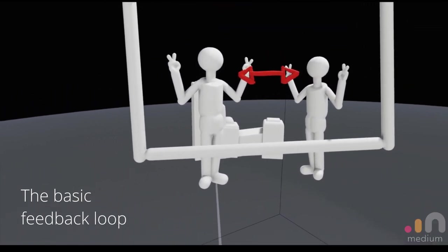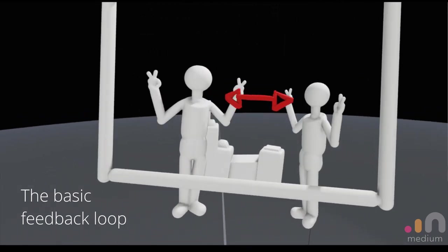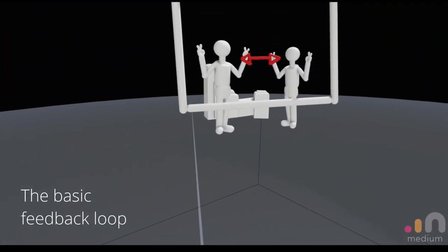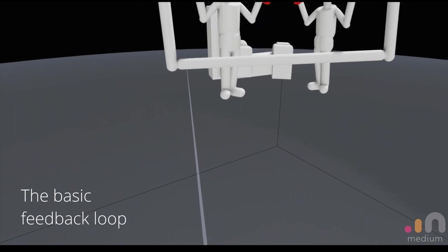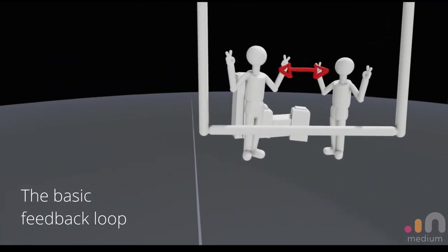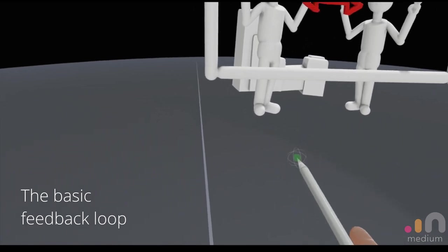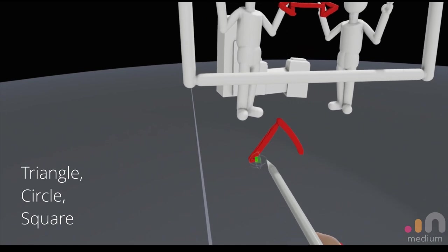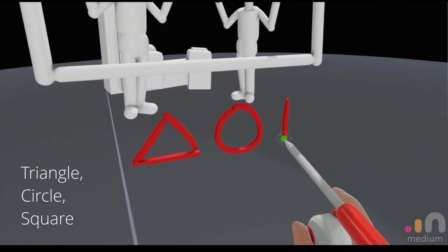But since we're already in a pretty cool 3D space anyway, why not just take advantage of it? So I actually came up with a little method on my own to help drive the virtual compositions a bit better. I have the basic shapes: triangle, circle, and square.